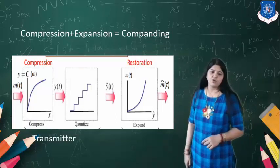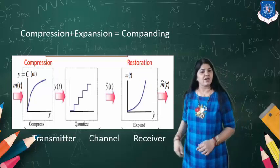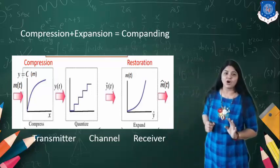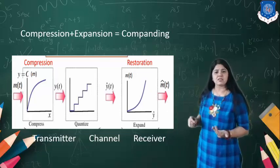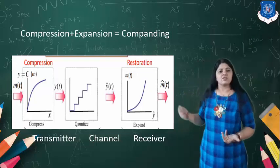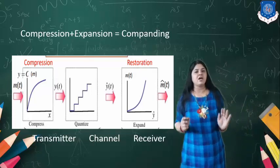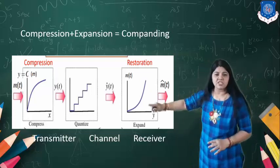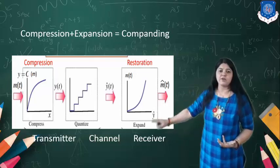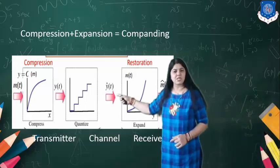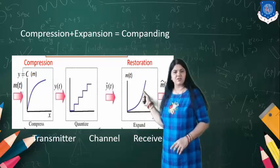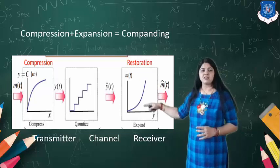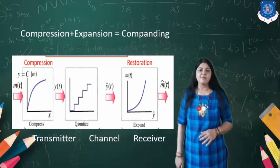Looking at the diagram: we have our input signal m(t), which is an analog signal. We discretize it using sampling and quantization to get the quantized output. Then compression plus expansion is performed at the transmitting end. The signal is transmitted via the channel and received by the receiver. At the receiver, we expand the signal, giving us the reconstructed output M-hat(t).